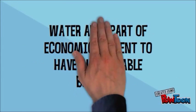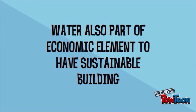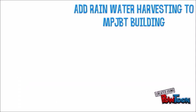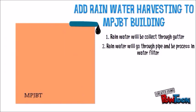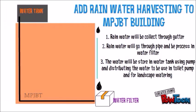Water is also part of the economic element to have sustainable building. Rainwater is collected through gutters. Rainwater will go through pipes and be processed in water filters. The water will be stored in water tanks using pumps and distributing the water to be used in toilets and for landscape watering.